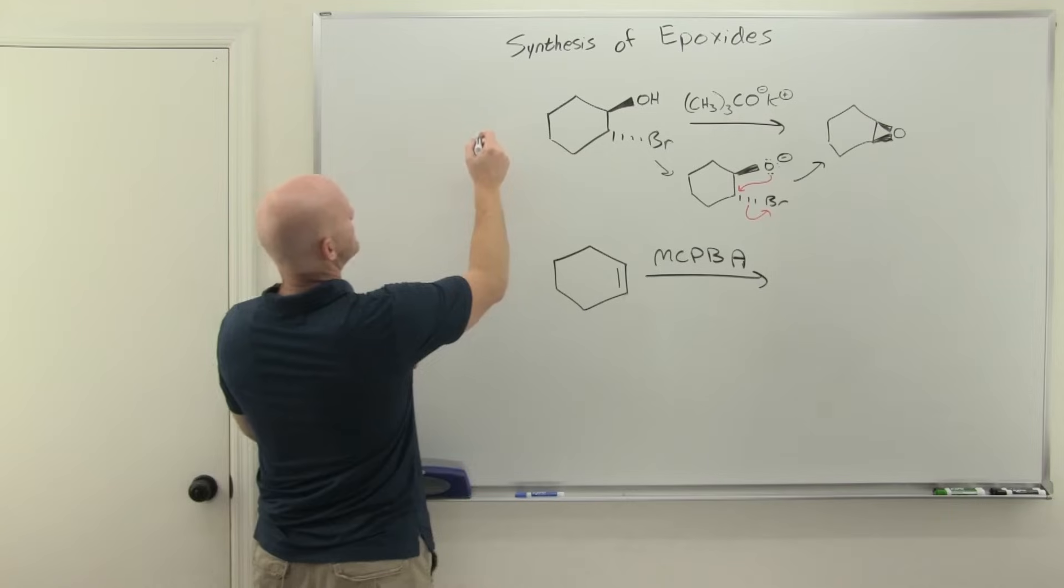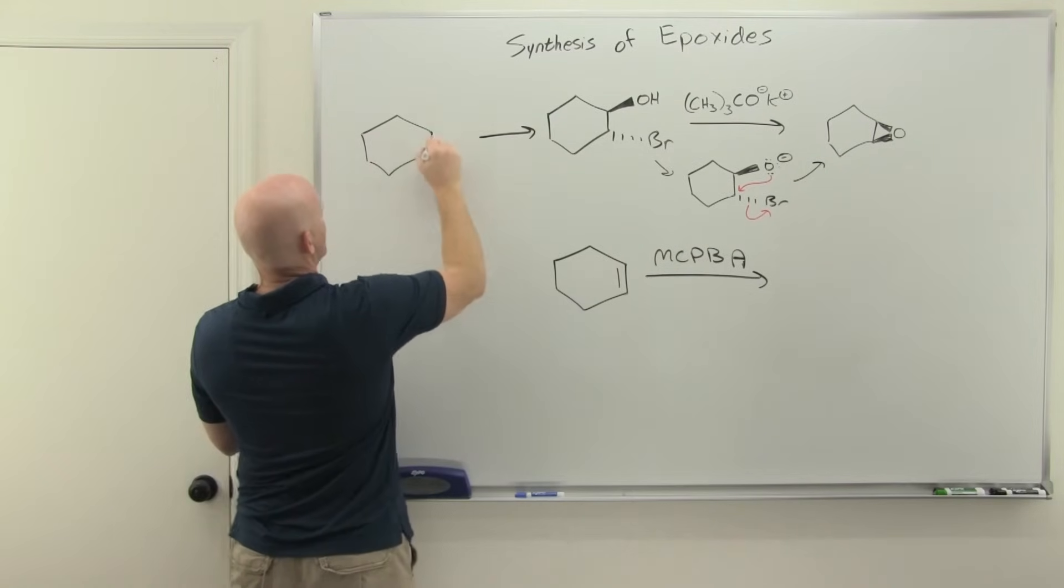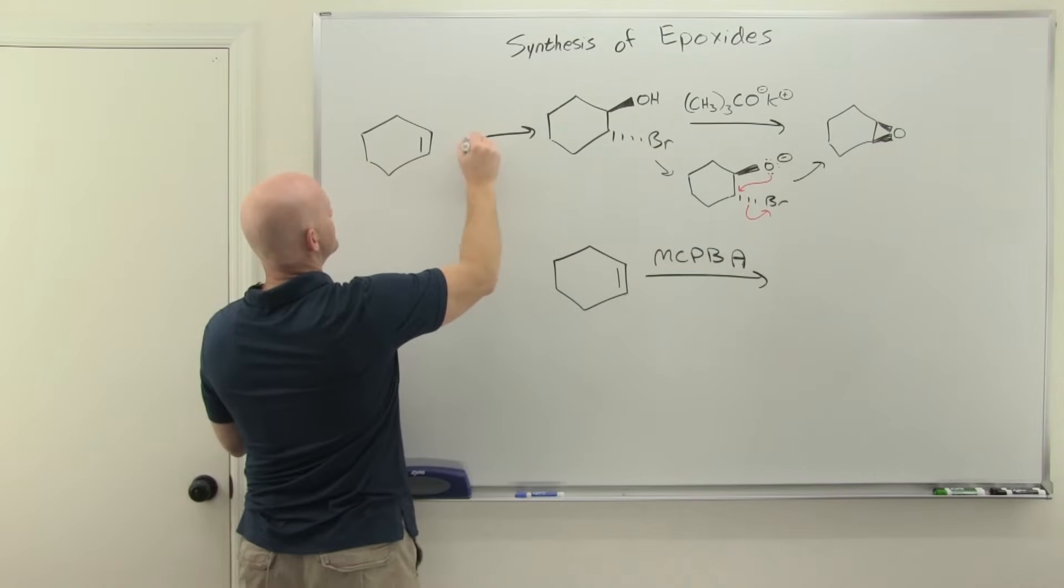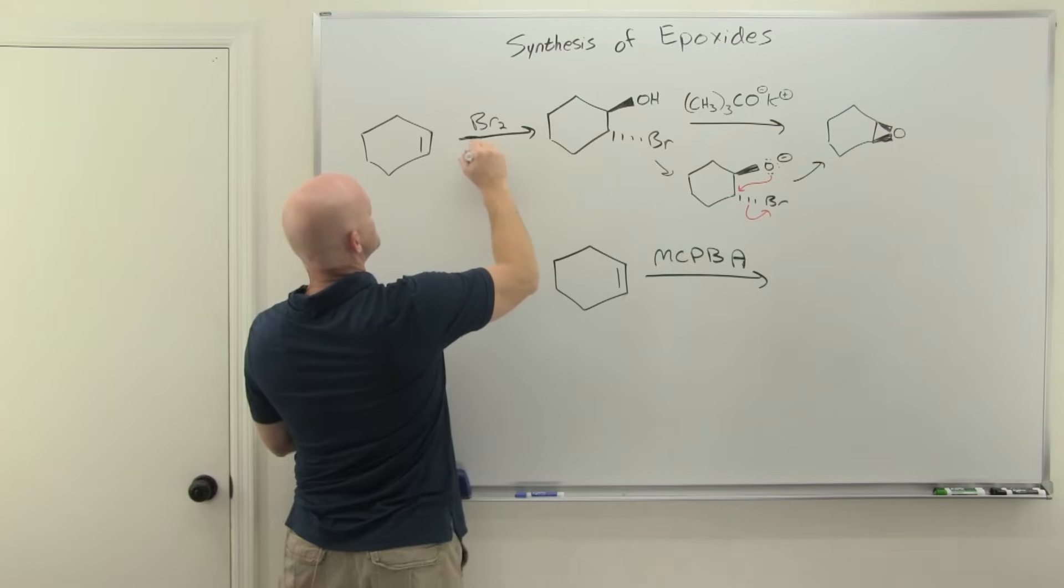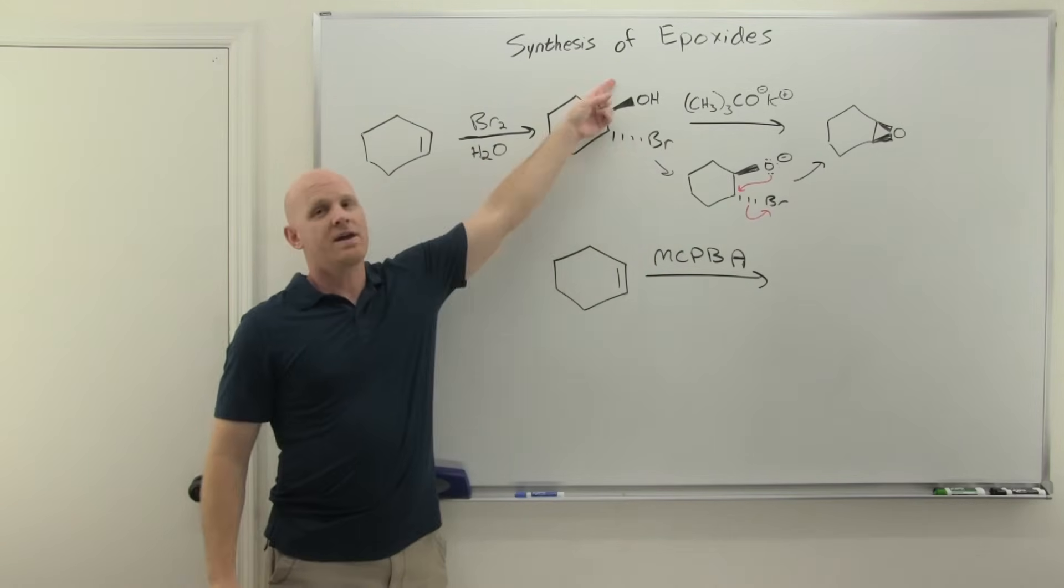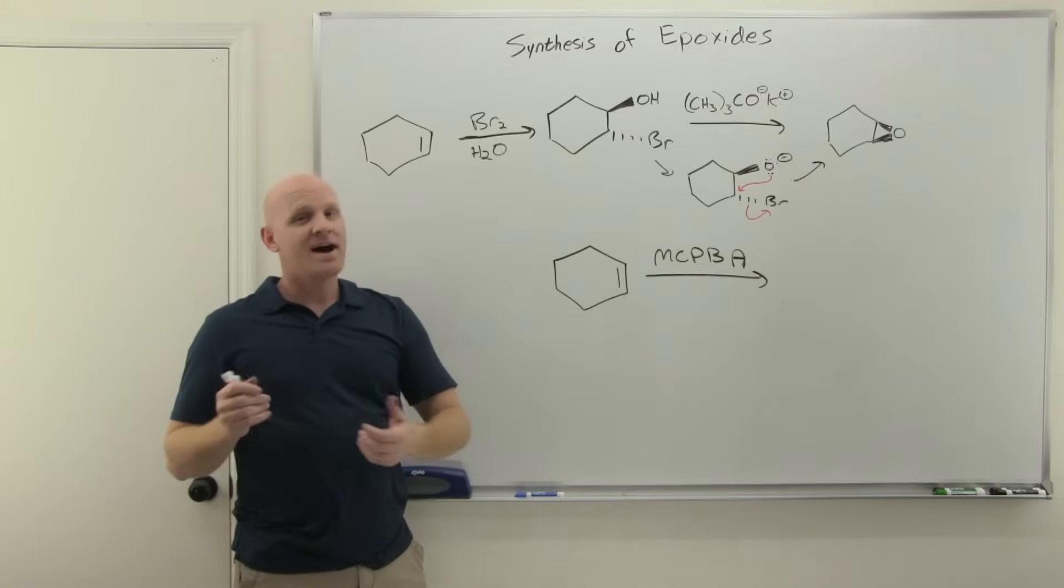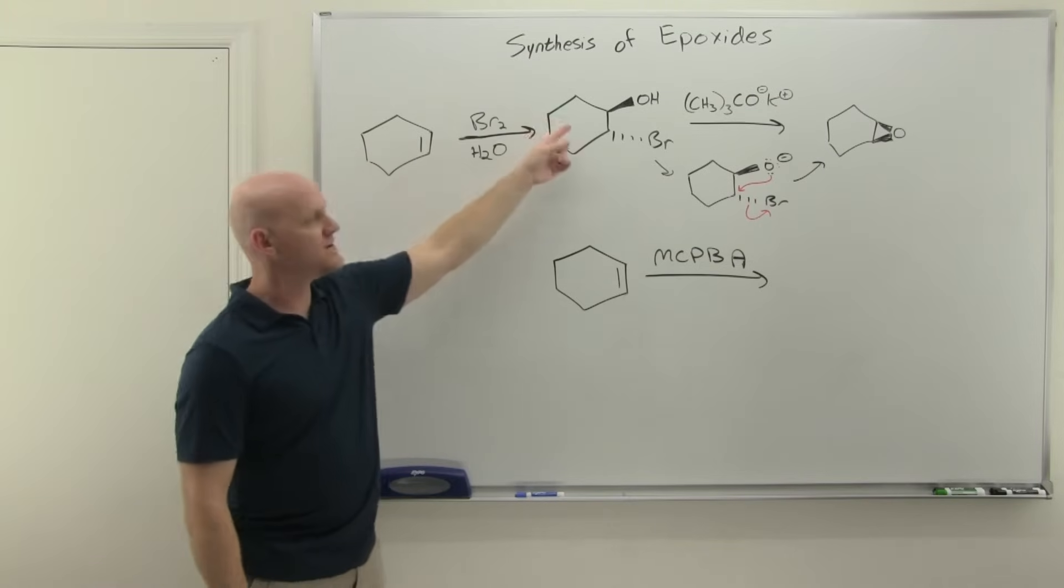And one other thing, I want to backtrack on this one one further step, because you guys did learn how to end up with this exact kind of scenario from an alkene. If you do the addition of Br2 in water, it'll add a Br and an OH, and it's anti-addition, so they end up trans to each other if that occurs on a ring. So you learned how to turn an alkene into this.